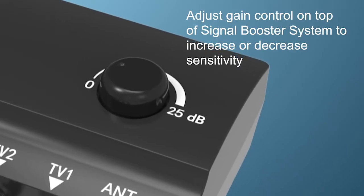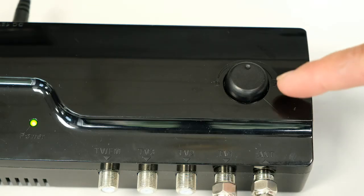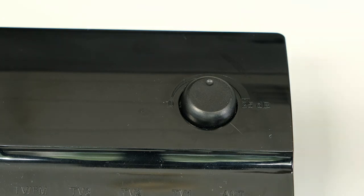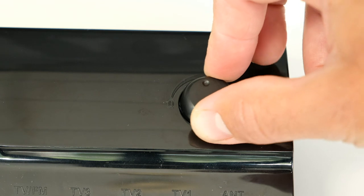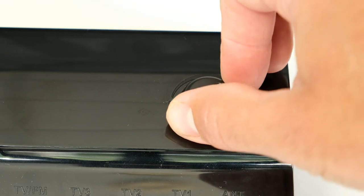Adjusting signal booster dial for clearer reception. As we mentioned earlier, on top of your signal booster is a gain dial. This allows you to adjust the strength on the channels you love if that channel needs a little more quality. Raising the gain all the way up will not get you more channels.